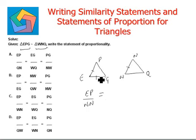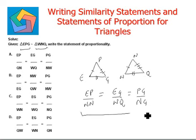And the last one is PG corresponds to NQ. This is our correct statement of proportionality and can be seen in option, option C is the correct one.